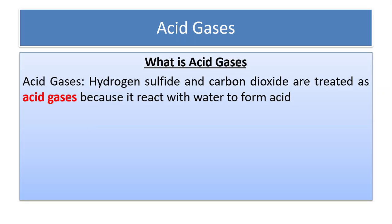The first definition: what are acid gases? Acid gases can be defined as a mixture of hydrogen sulfide (H2S) and carbon dioxide (CO2). They are treated as acid gases because they react with water to form acid. That is the basic, simple definition.